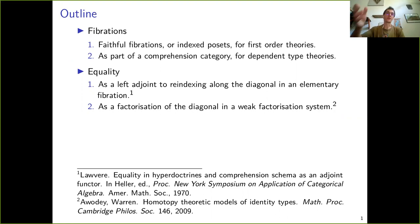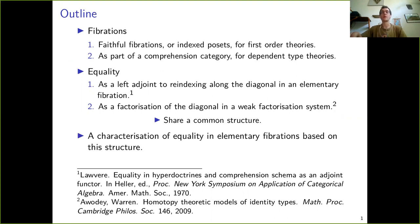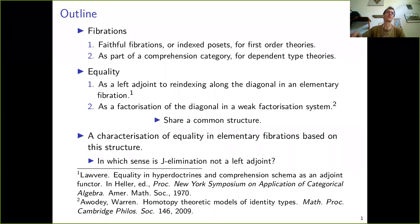As different as they may seem, these two approaches to equality share some common structure, and in trying to isolate this structure we prove a characterization of elementary fibrations based on this common structure. Besides being interesting in itself, we also hope it can help shed light on the question of in which sense the J-elimination is not a left adjoint.